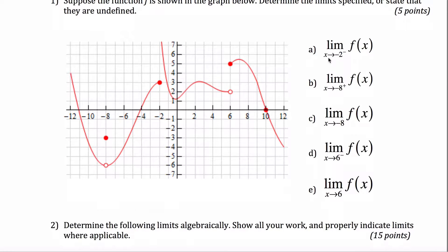In part A, you're asked to find the limit as x approaches negative 2 from the negative side. Here's negative 2 right here, but since we want the limit as we approach from the negative side, we're thinking about a guy walking up this way and what height is he approaching, and it looks like the height would be 3. So that's equal to 3.